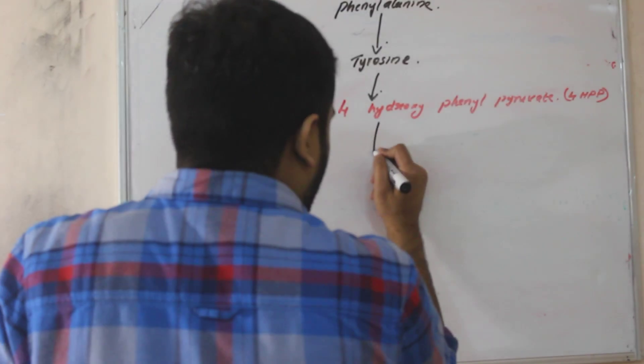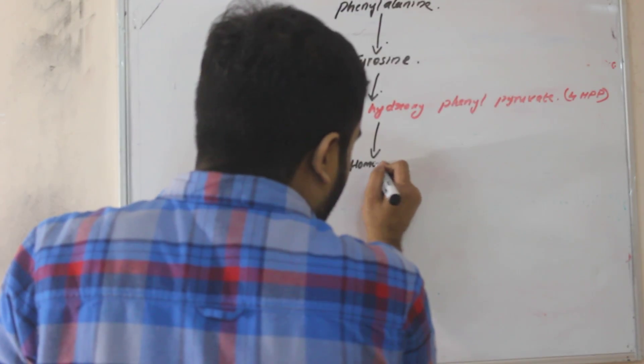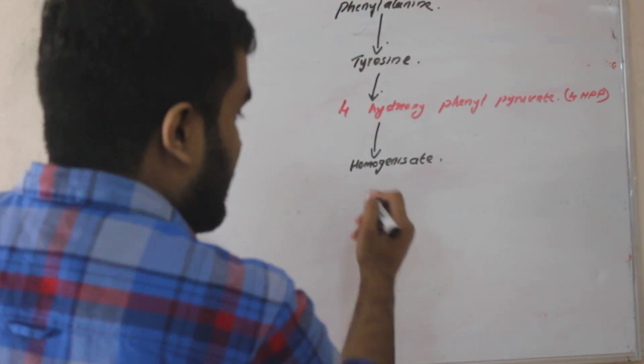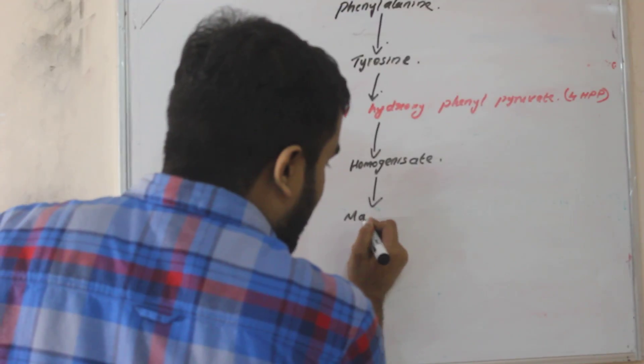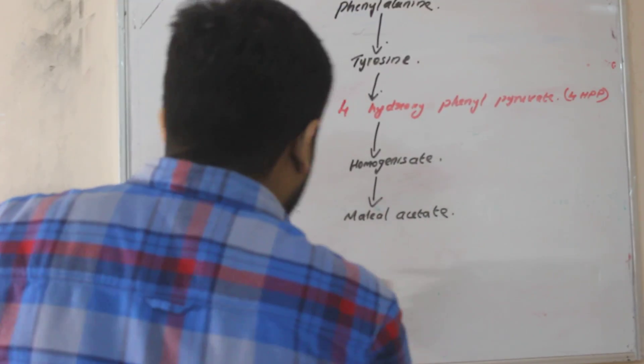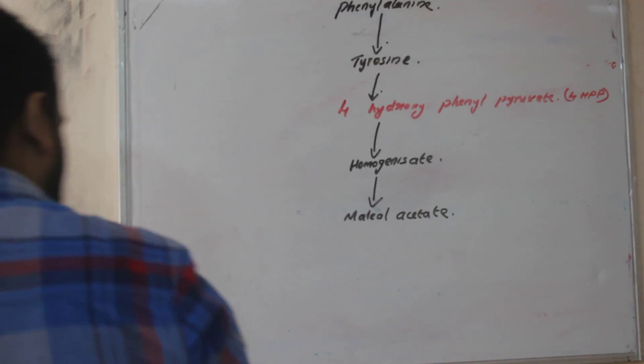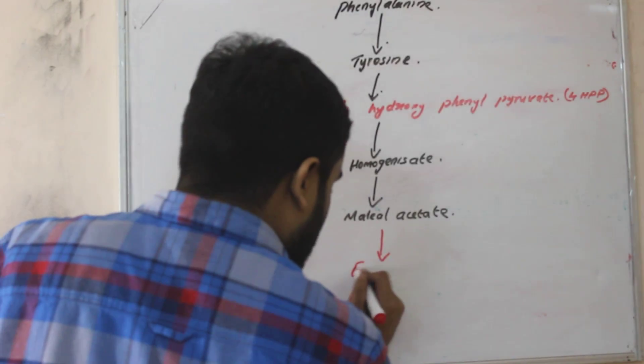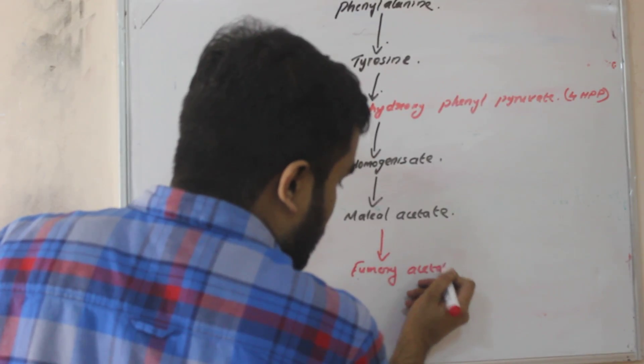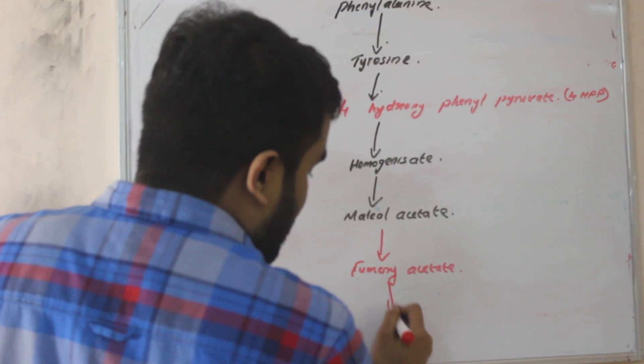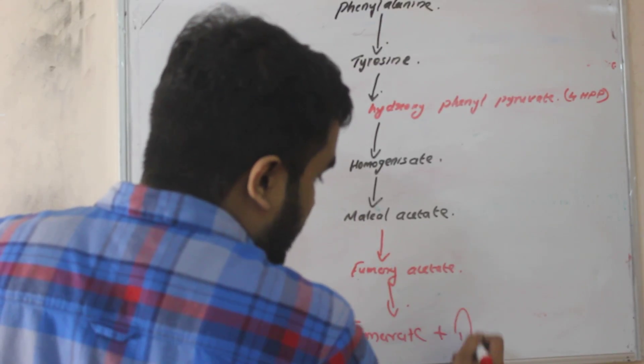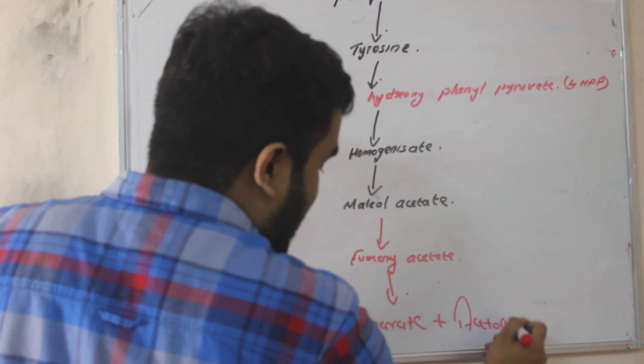Then it will form homogentisate. Then it will form maleoacetate. Then again one important hormone is fumarylacetate. Then it will form our plastic product, fumarate plus acetoacetate.